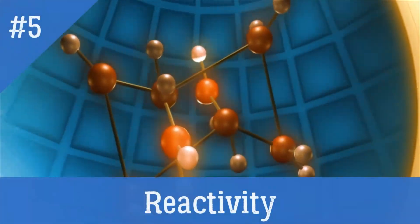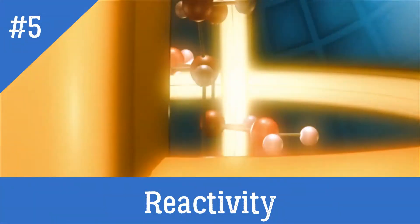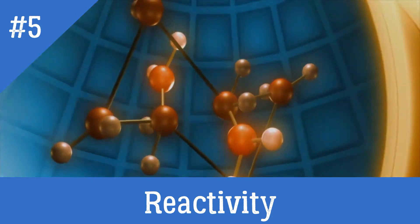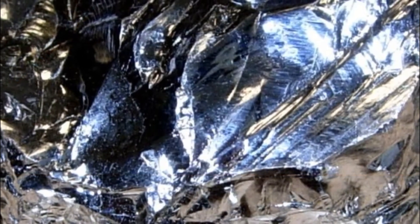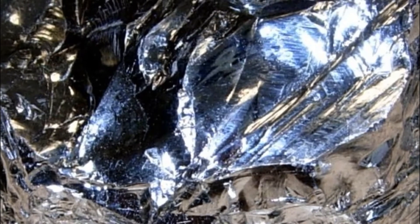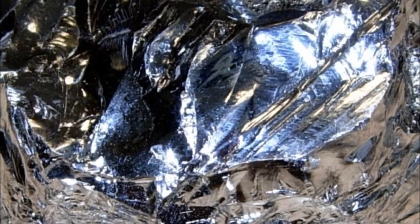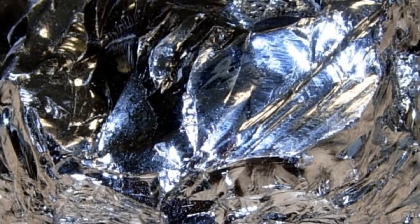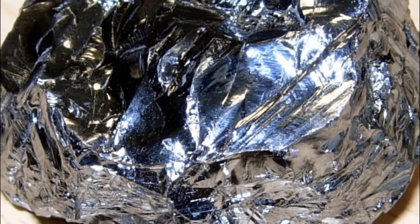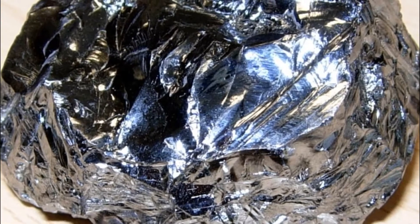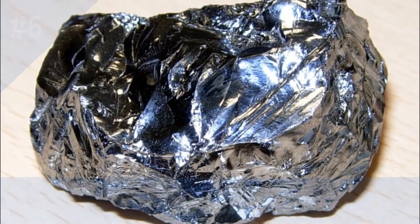5. Reactivity: Given their intermediate condition, the metalloids react differently depending on whether they are in the presence of a metallic element — in which case they react as a non-metal — or a non-metallic element — in which case they react as a metal. They have an affinity for different elements and are usually found in minerals along with them, such as uranium, lead and sulfur.